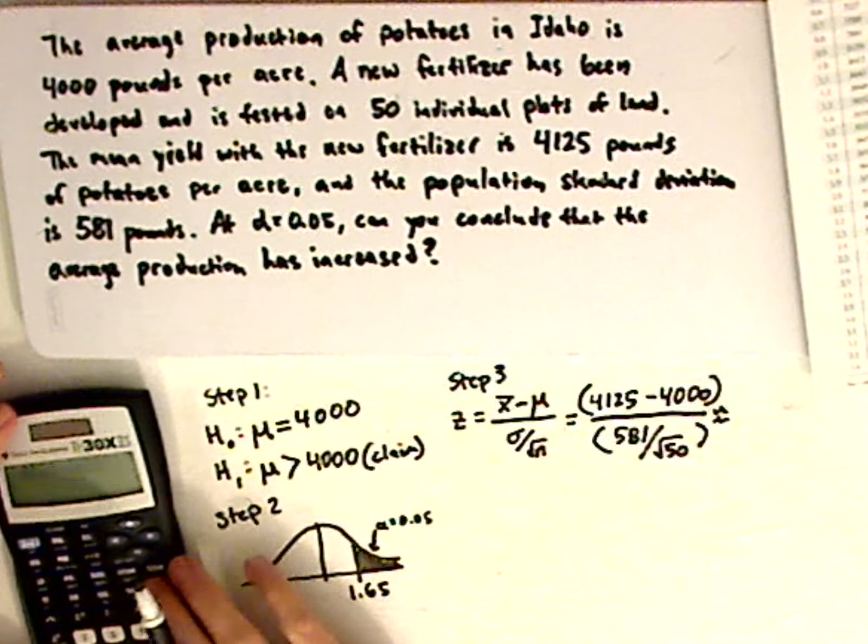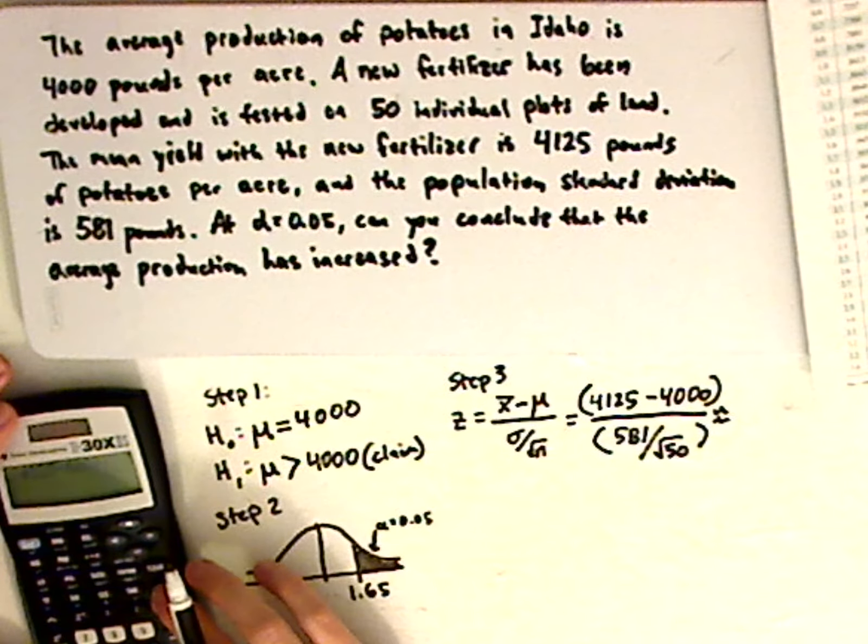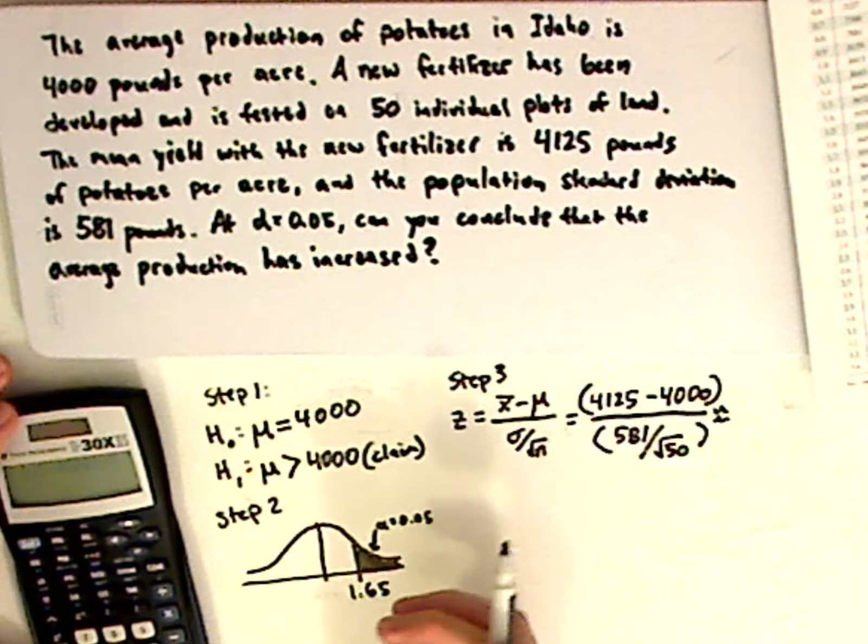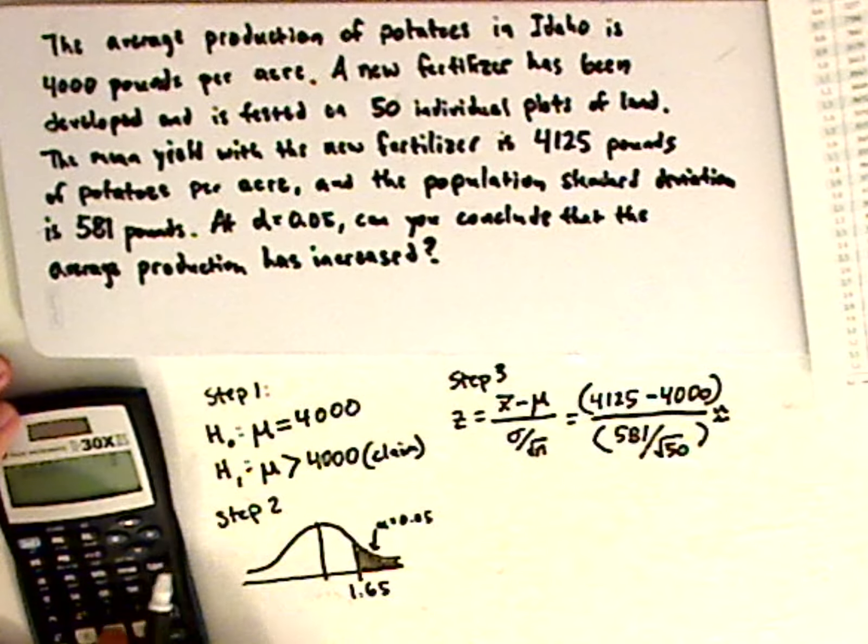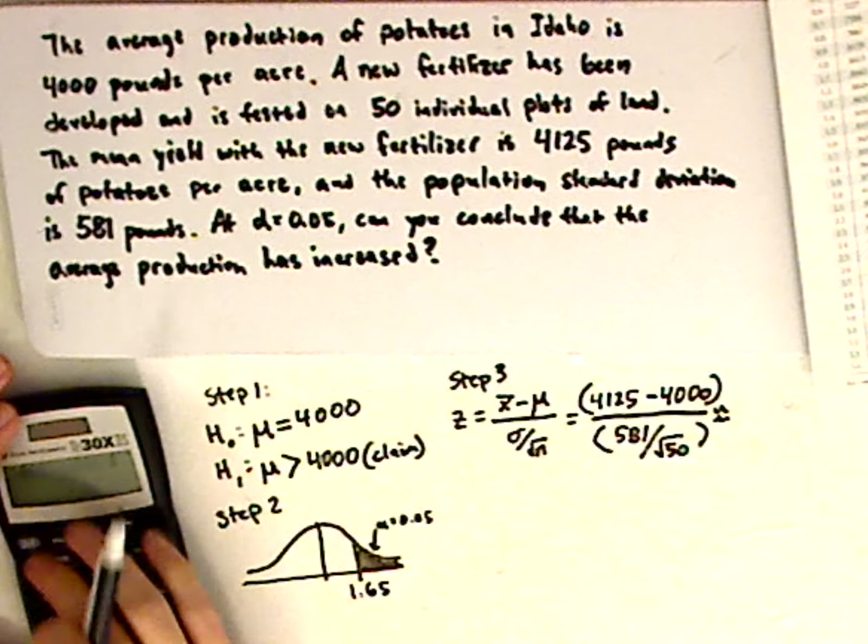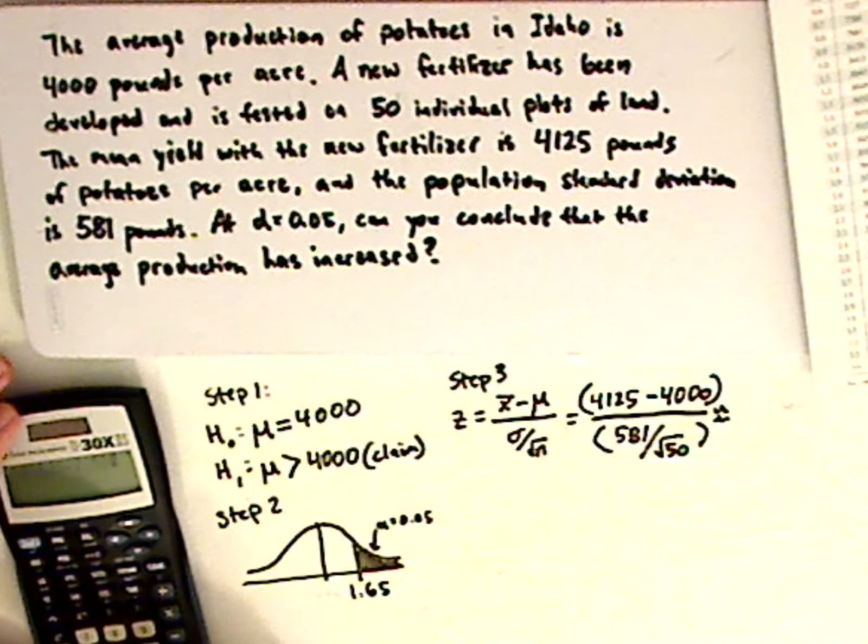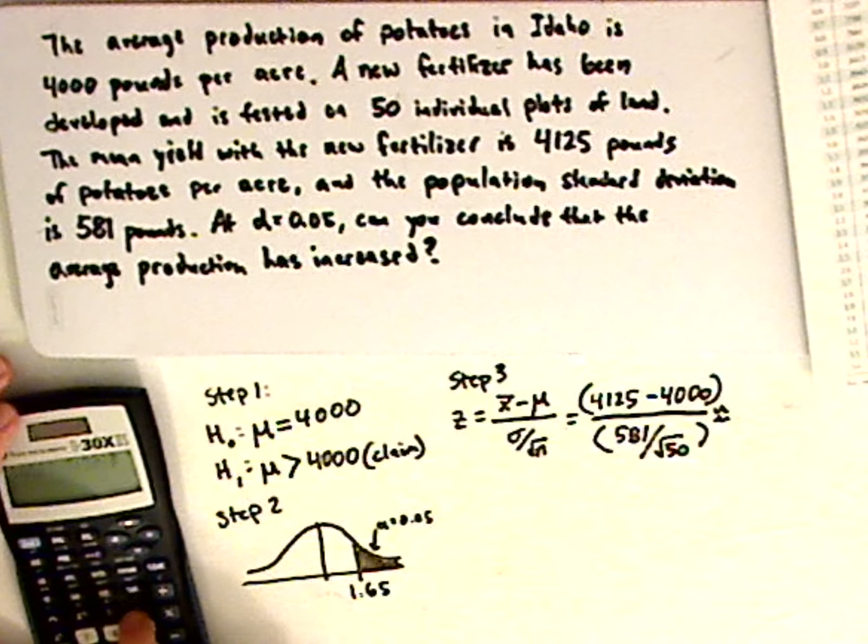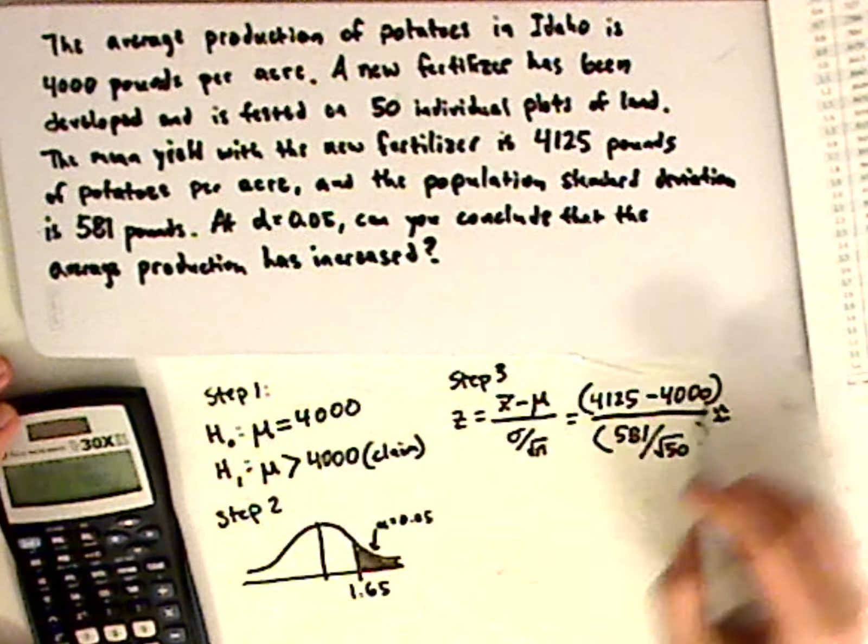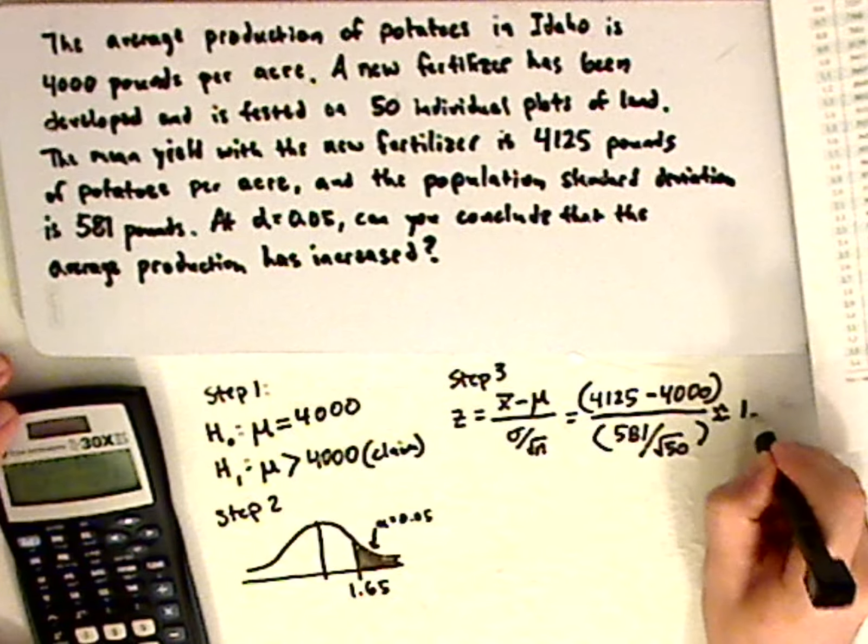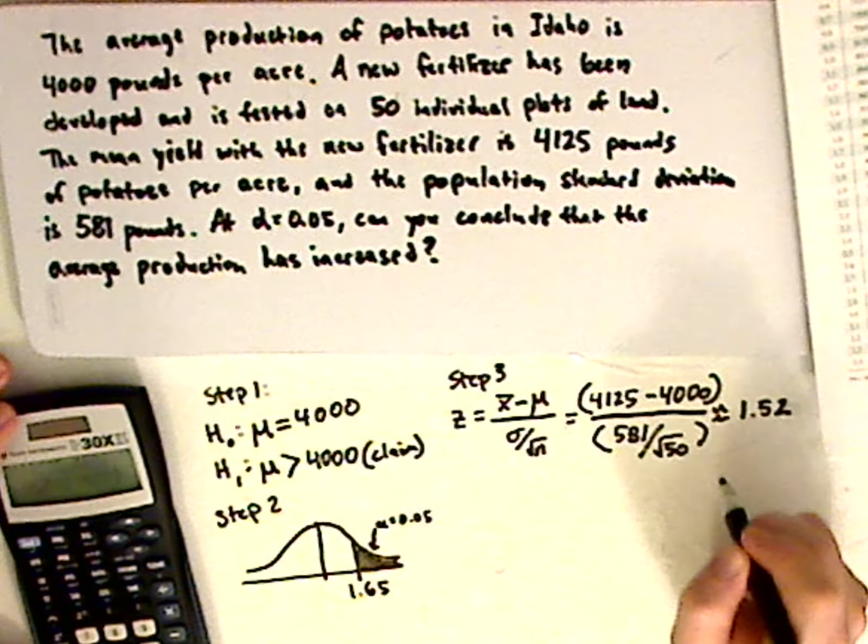And in between, it's a fraction bar, and the fraction bar represents a division sign. So I could press divide, and then parentheses, 581 divided by the square root of 50. I have to close for the square root, and then I have to also close for the denominator here. And I get 1.52, approximately.